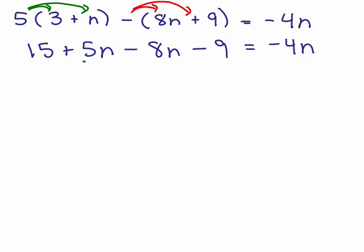Well, my like terms here for the variable parts are 5n and negative 8n, so you have to add those together: 5 minus 8, which is 5 plus negative 8 is negative 3n. And then we're going to add 15 minus 9, which is plus 6. All right, so I've simplified the left-hand side.